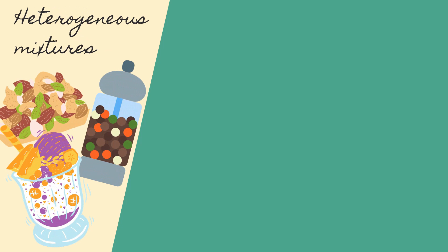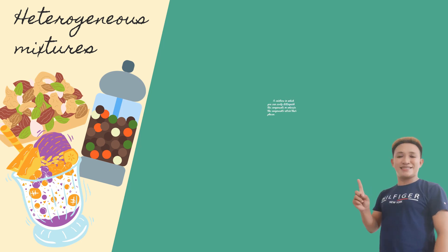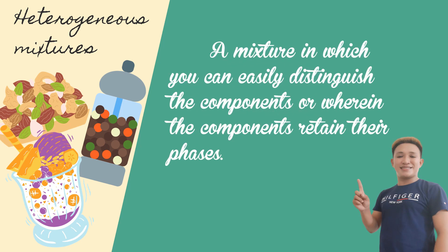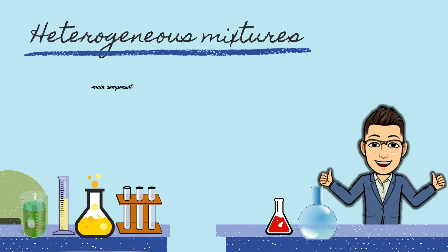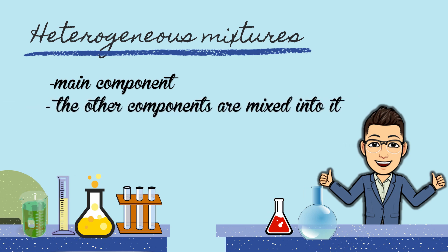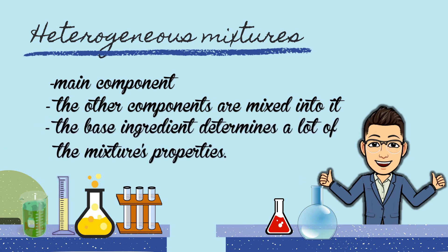Halo-halo and mixed nuts are examples of heterogeneous mixtures. A heterogeneous mixture is a mixture in which you can easily distinguish the components, or wherein the components retain their phases. Heterogeneous mixtures have a main component or base ingredient, which is the most abundant component. The other components are mixed into it. The base ingredient determines a lot of the mixture's properties, and the added ingredients also bring in their individual properties into the mixture.